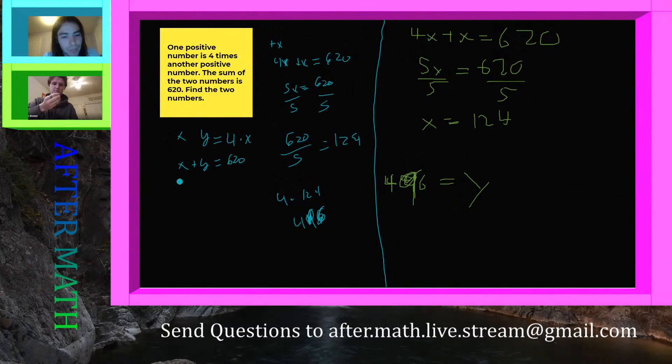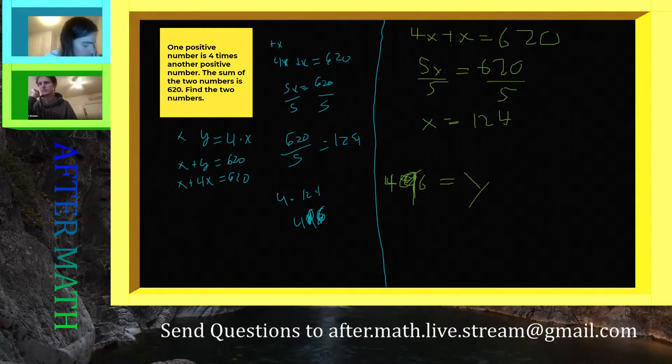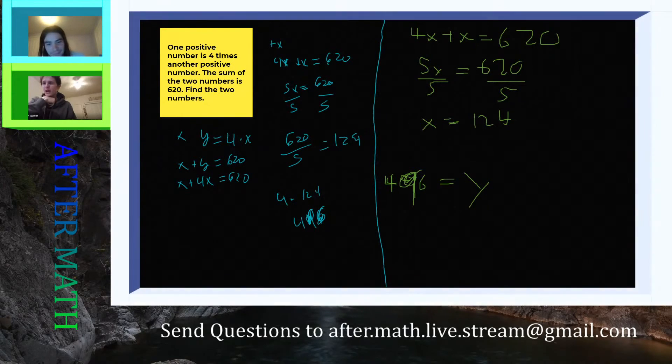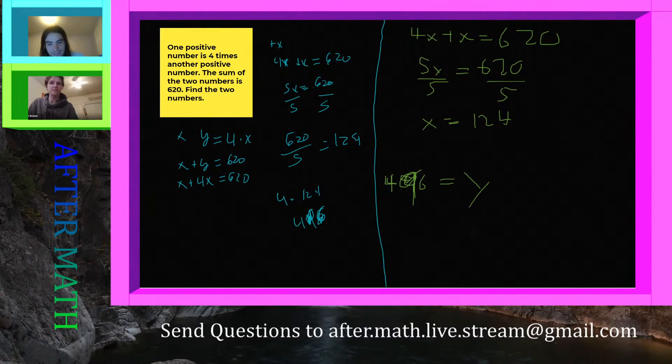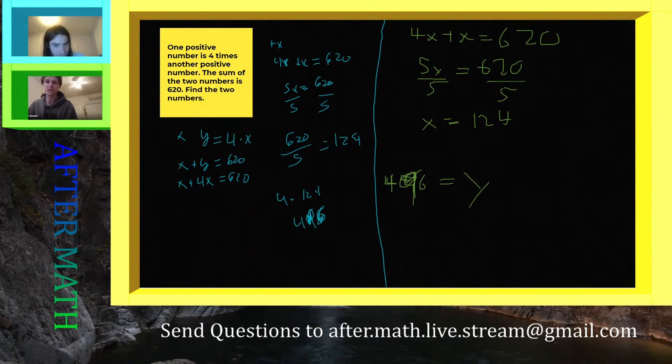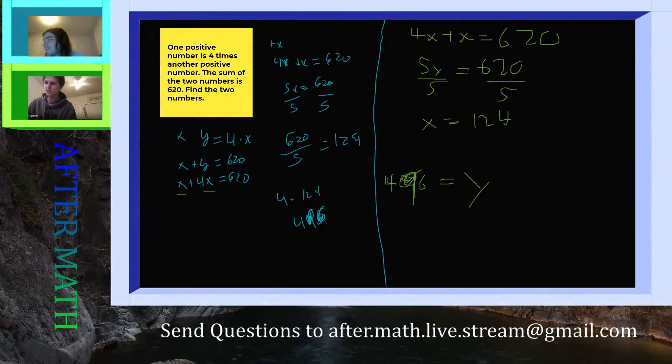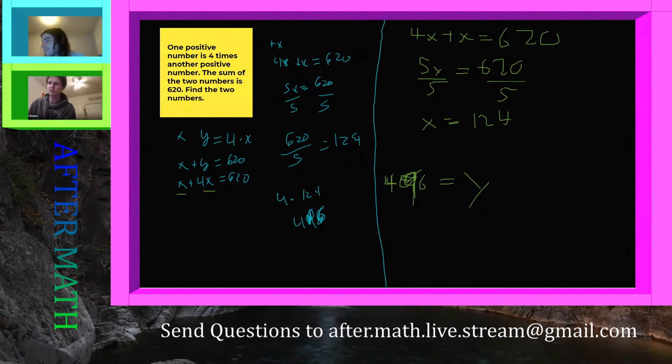And then Jayden, do you want to take it from here? Yeah, then we can combine like terms on the left hand side of the equal sign. Like terms are terms that share the same variable or they don't have any variables at all. In this case, both of these have x, so those are like terms. And none of the x's are squared, so we know we can combine those. And this is considered a 1x, so 1x plus 4x gives us...